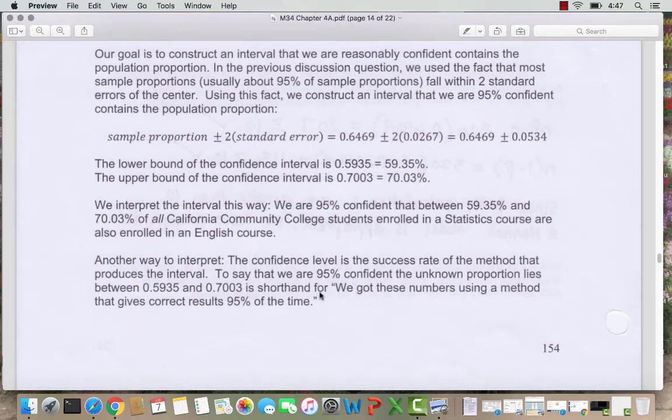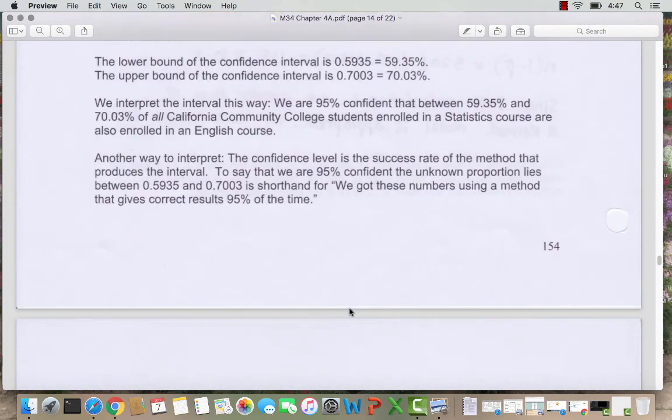Here's another way you might interpret. You could say the confidence interval is the success rate of the method that produces the interval. To say that we are 95% confident the unknown proportion lies between 0.5935 and 0.7003 is shorthand for we got these numbers using a method that gives correct results 95% of the time. So when you write out confidence intervals, you want to use one of these structures to explain the meaning of your interval. It's important that you explain that we're predicting about the population proportion for all California Community College students.